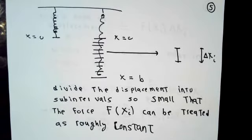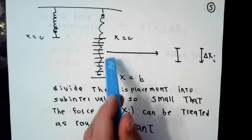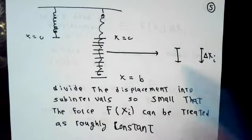So I'm going to imagine dividing the stretched part of the spring, the displacement of it, starting at x equals zero, ending at x equal b into many, many small sub-intervals. I'm thinking of taking one of them and magnifying it.